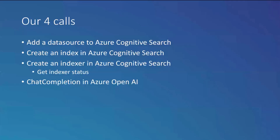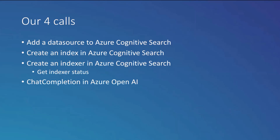The actual work is four and a half API calls. First, add the SharePoint library as a data source to Azure Cognitive Search. Second, create an index in Cognitive Search. Third, create an indexer — this is a two-step process because the call runs continuously while waiting for a device code flow login, so we need to run a status call in between. The last call is the actual chat completion call against Azure OpenAI, asking it questions against our data now indexed by Cognitive Search.